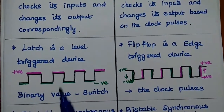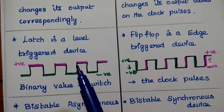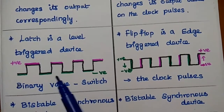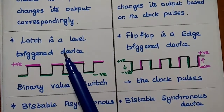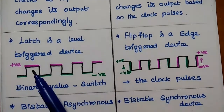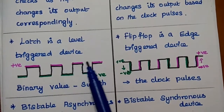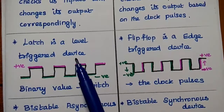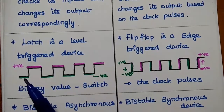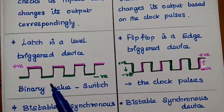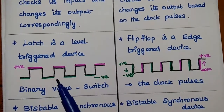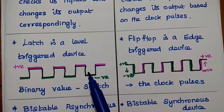Latch is a level-triggered device. Level-triggered means it depends on binary value — there are two types of levels: positive level and negative level, used as switching values. Whenever the enable signal is in ON condition, that is binary value 1 (positive side), then it works — that is called a positive level-triggered device. There is also negative level-triggering, where whenever the enable signal is in the negative side, then the latch works.